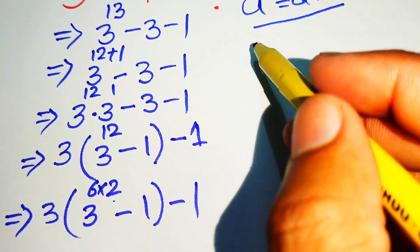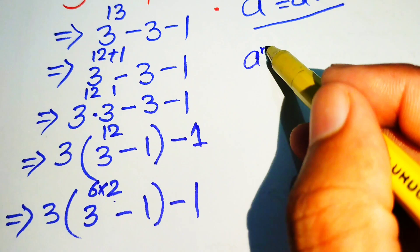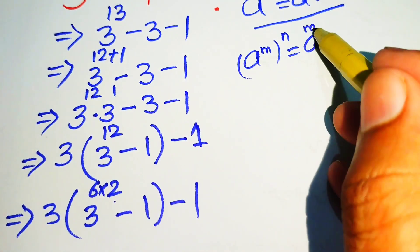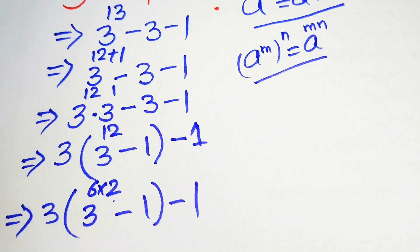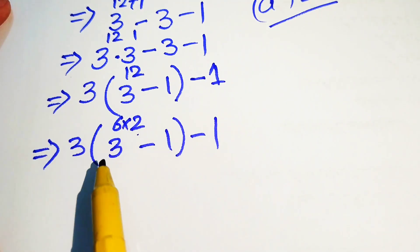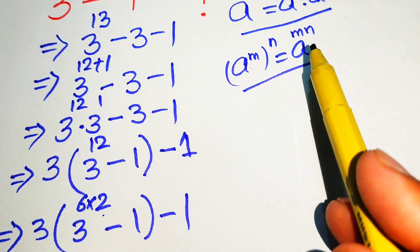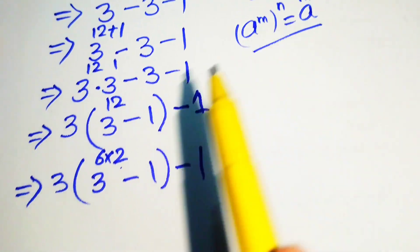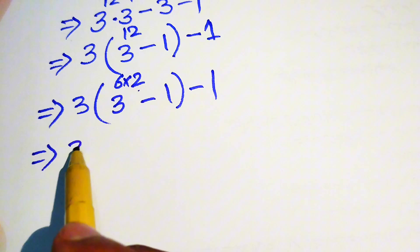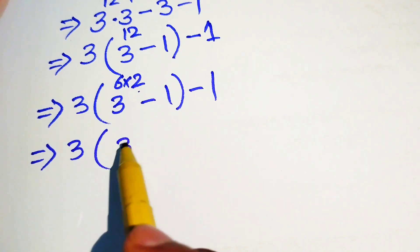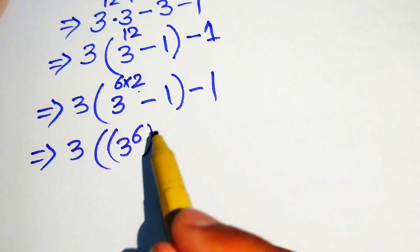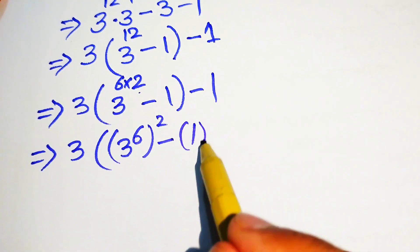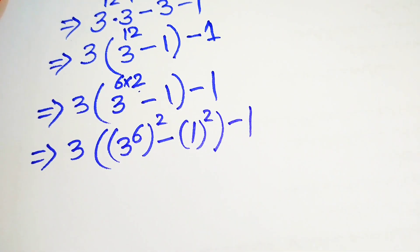We use another exponential law: a to the power of m to the power of n equals a to the power of m times n. Using this law, we rewrite the expression as 3 to the power of 6 whole squared, minus 1 squared, and this is minus 1.